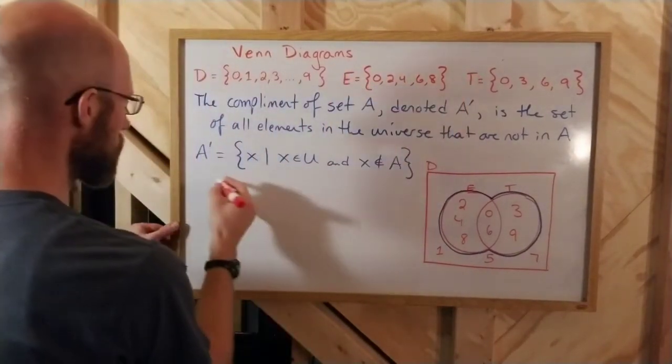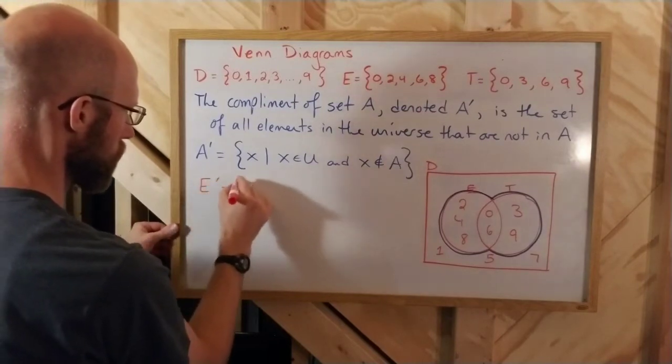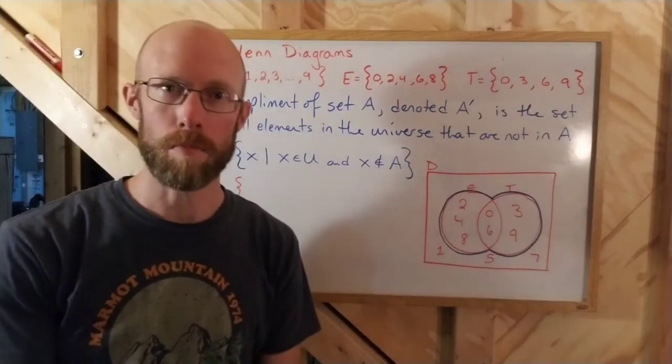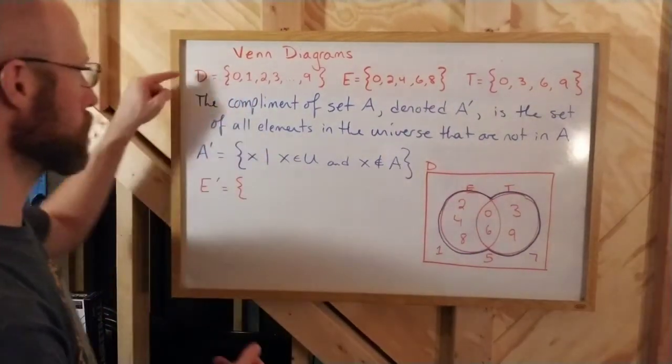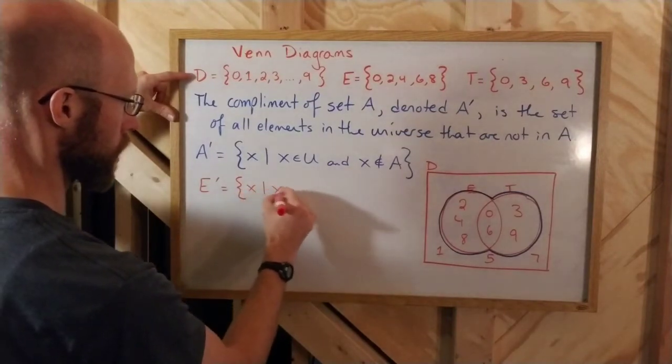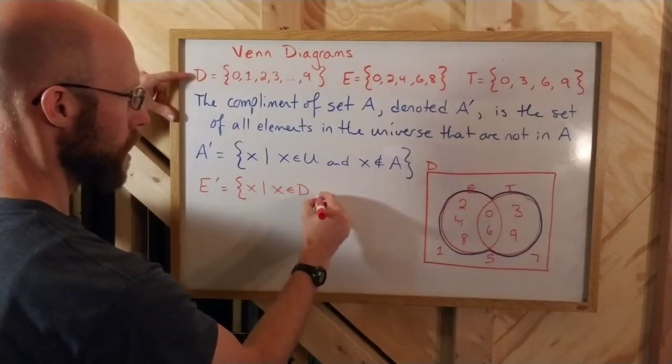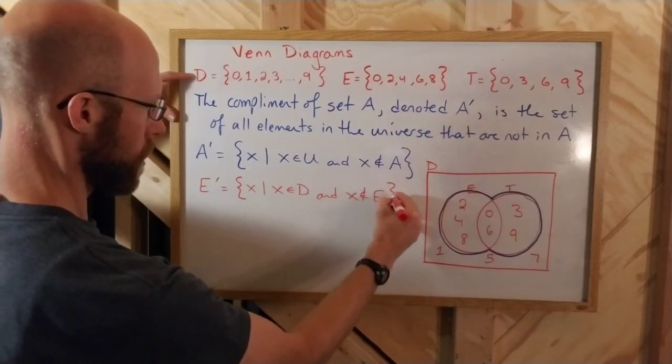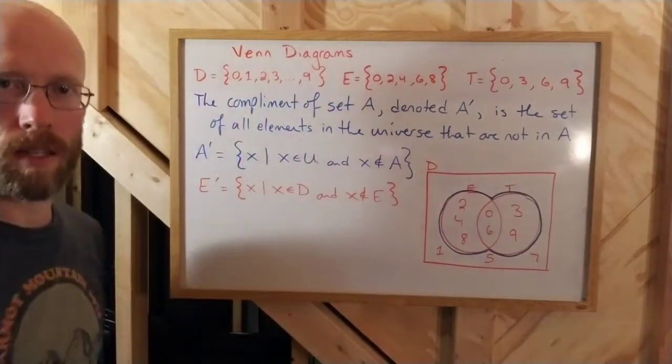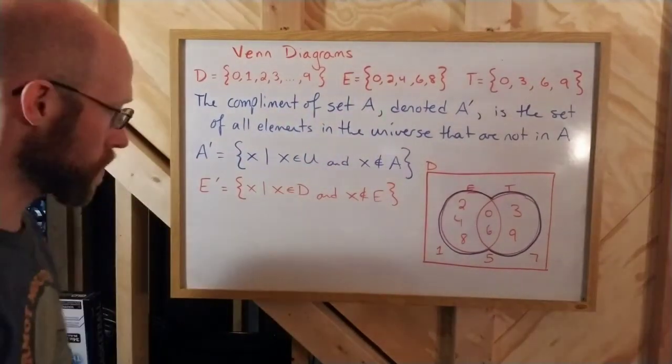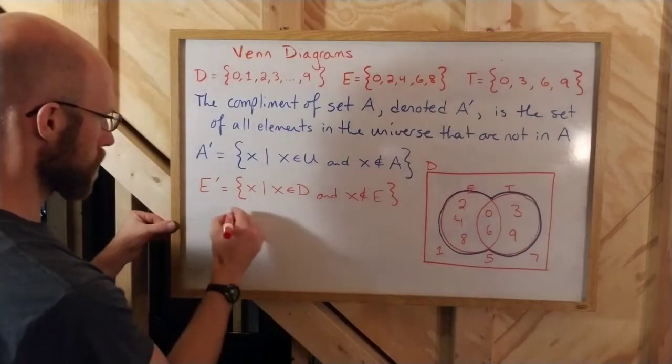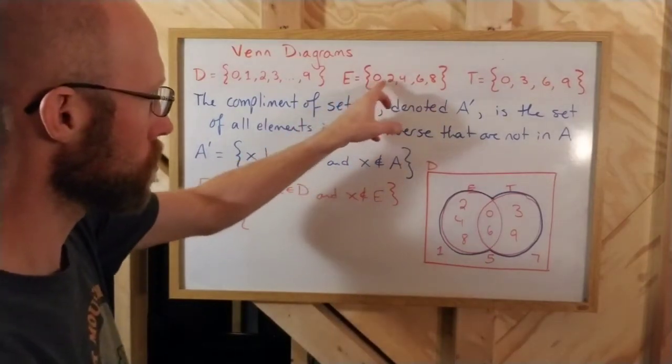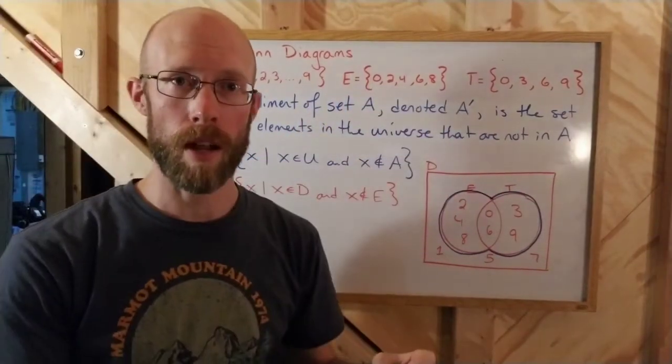Let's look at the complements of E and T, respectively. Let's look at E first. Complement of E, again, is everything that's in D but not in E, right? D being the universe, so it's all X is such that X is in D and X is not in E. So it'd be the corresponding set builder notation for this particular case. If I wanted to list this off in roster notation, I just look at my set E, 0, 2, 4, 6, 8, and pick out everything else.